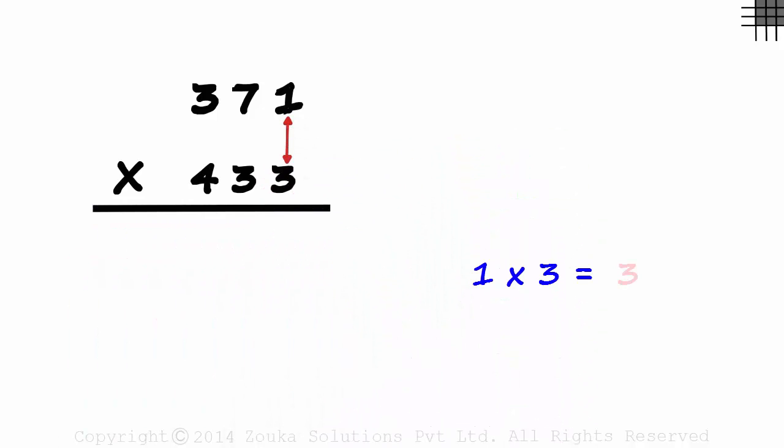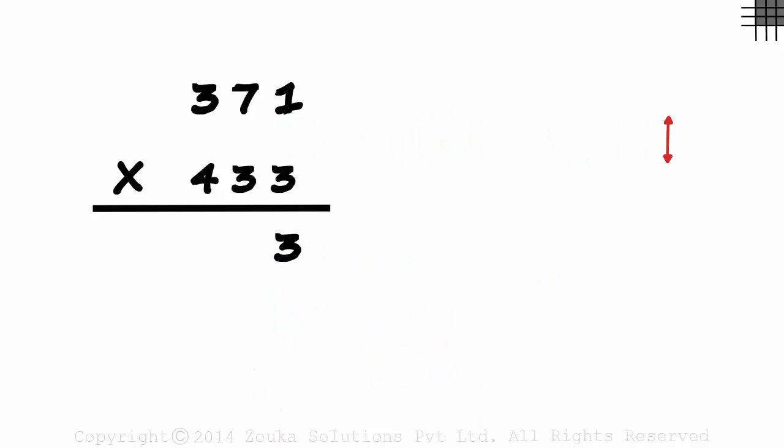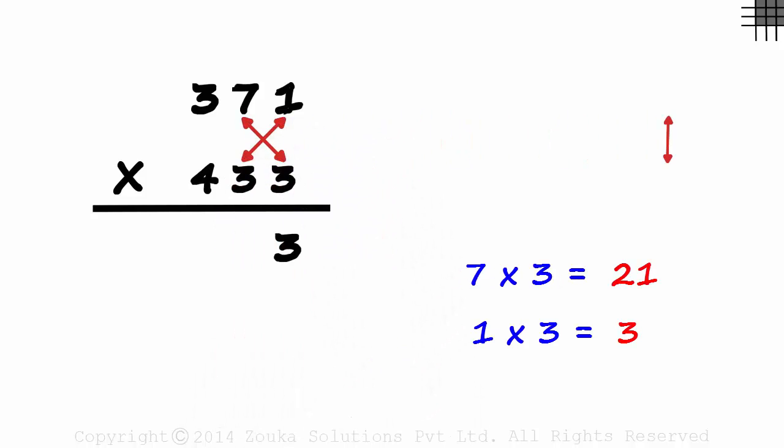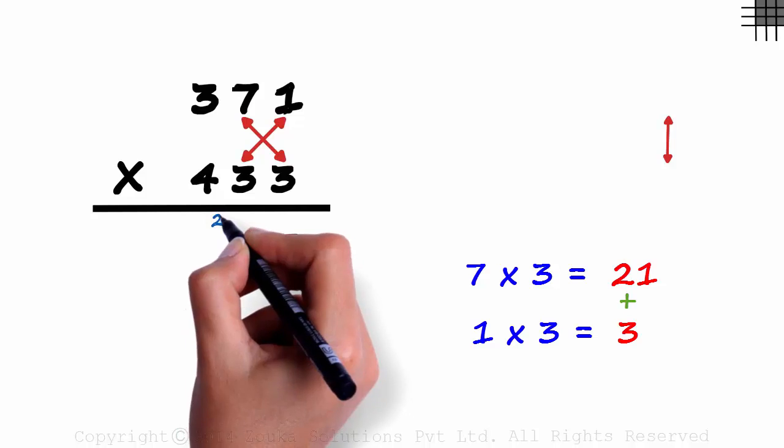first we multiply one with three. It equals three. Then we write the sum of this product and this one. 21 plus 3 is 24. We write a 4 here and carry the 2 over. Remember it's 1, 2, 3, 2, 1.